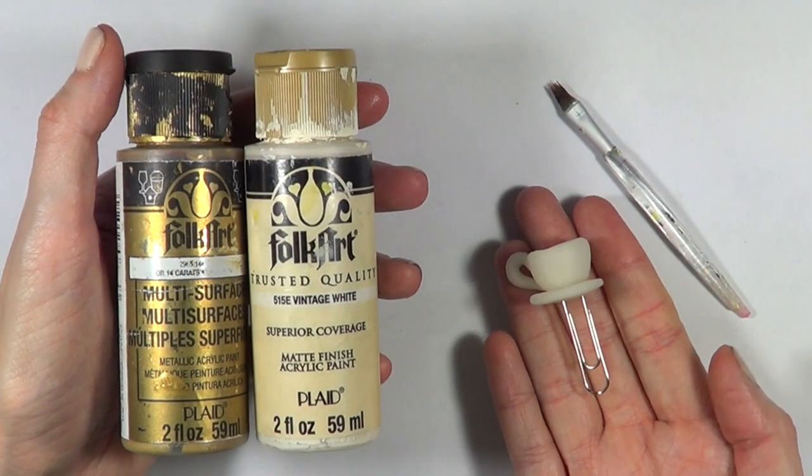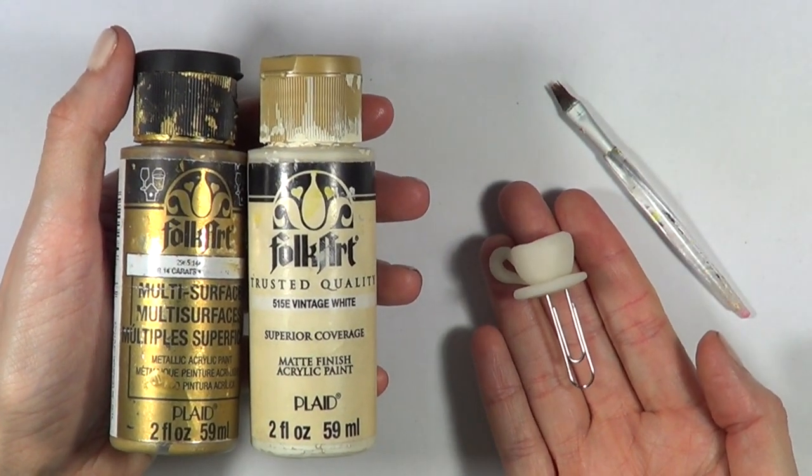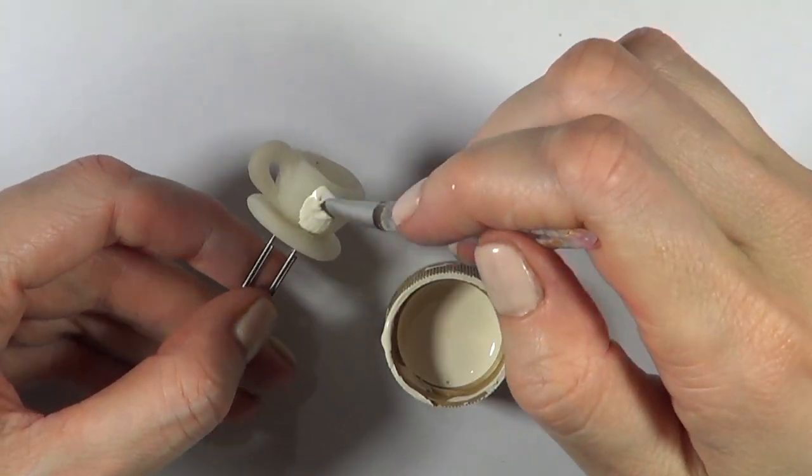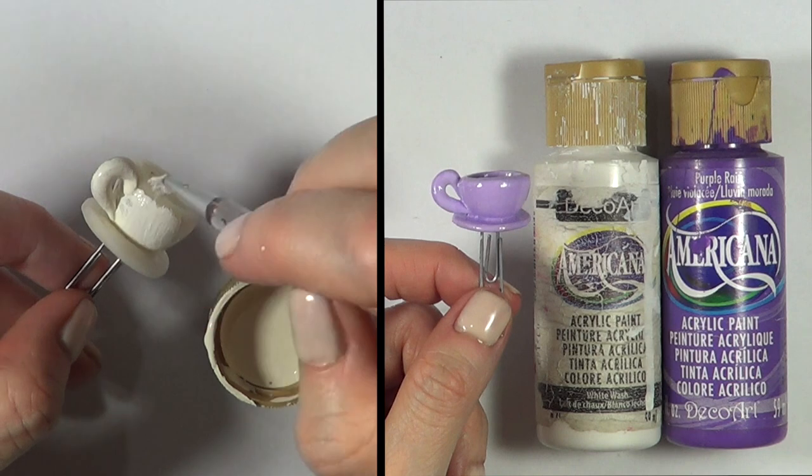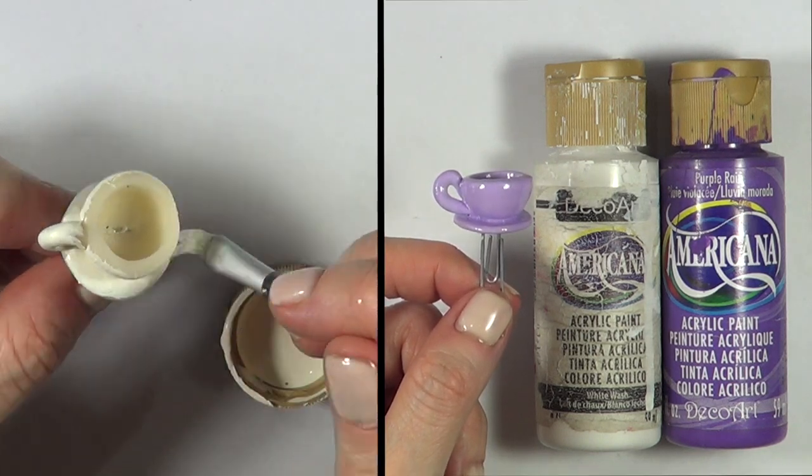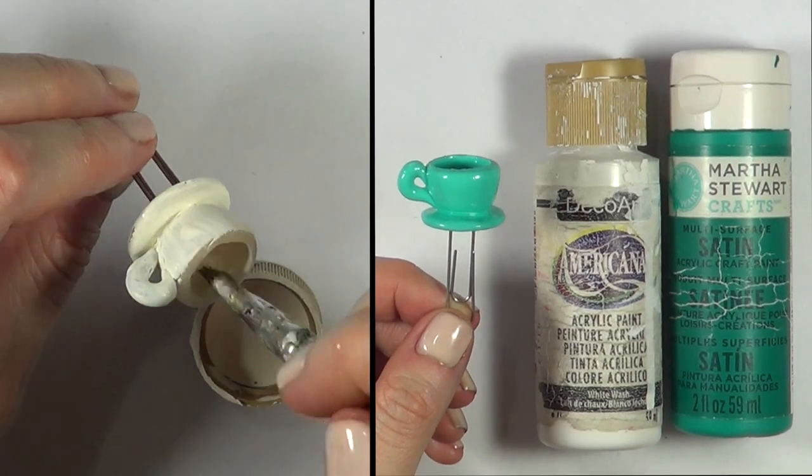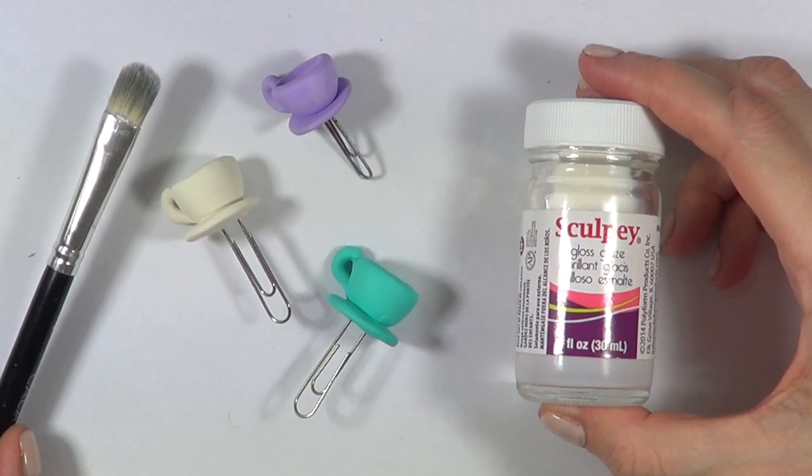And then to paint this, I'm showing you now the gold one but I didn't go for this. I just went with this vintage white and brush painted the whole thing. And then I made this lilac one mixing some purple and some white, and this teal one just mixing this teal with some white.